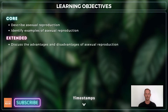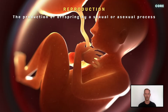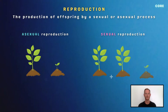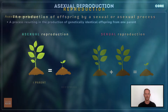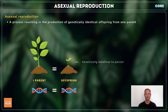For extended, you also need to discuss the advantages and disadvantages of asexual reproduction. Reproduction is the production of offspring, or the process of making more of the same kind of organism. There are two types of reproduction: asexual reproduction and sexual reproduction. Asexual reproduction is a process resulting in the production of genetically identical offspring from one parent. No gametes or sex cells are produced, and there's no mixing of genetic information, meaning the offspring are genetic clones of the parent.